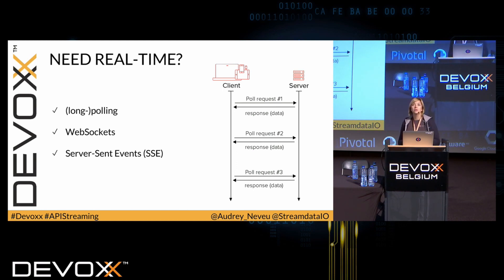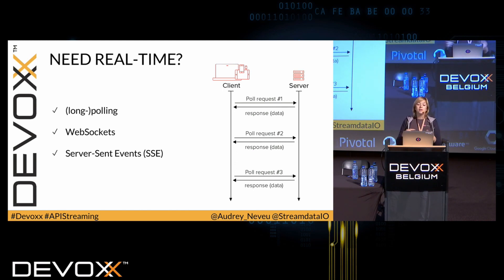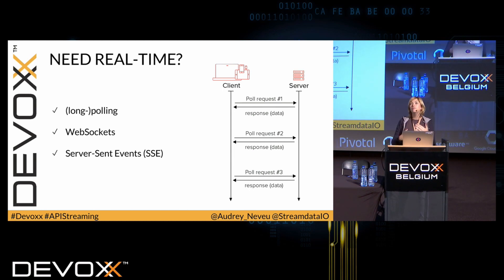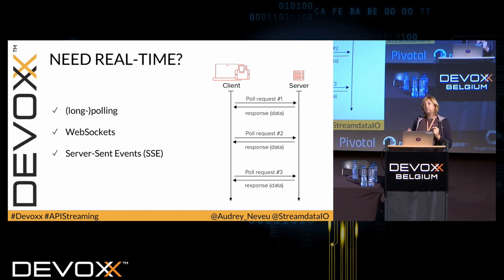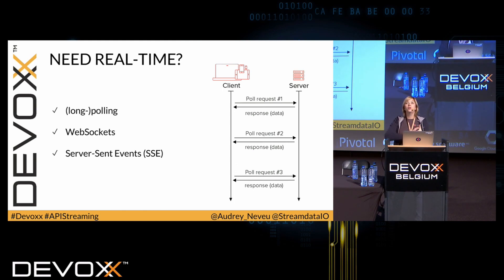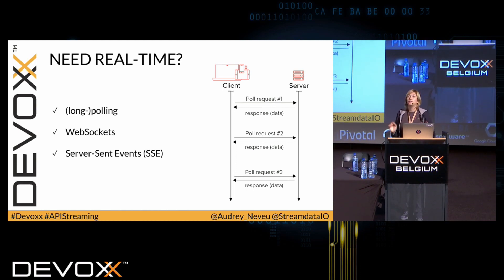WebSockets is a well-known solution. It's a very cool technology — it supports binary and it's bidirectional, meaning you can exchange data between the server and the client in both directions. The problem with WebSockets is that it has its own TCP-based protocol, so you have to reconfigure your proxy and load balancer. That's a little bit over-engineering for our use case, because we are only going to send data from the server to the client, and it's going to be just text. So we're going to use Server-Sent Events, which is a very cool push technology that, once the connection is open, streams data pushed by the server to the client as it happens. It only supports text, but that's fine for our use case.